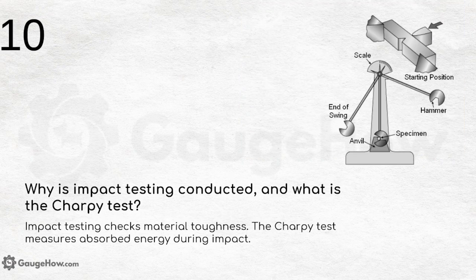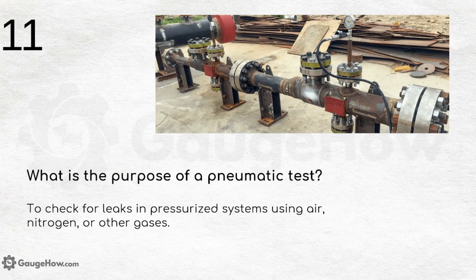Why is impact testing conducted and what is the Charpy test? Impact testing checks material toughness. The Charpy test measures the energy absorbed during impact — for example, when a car hits a wall, the Charpy test measures the energy absorbed during that impact.